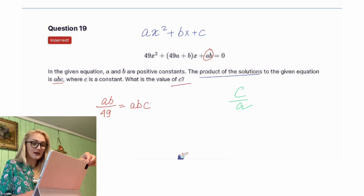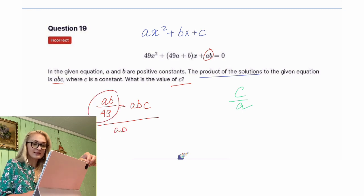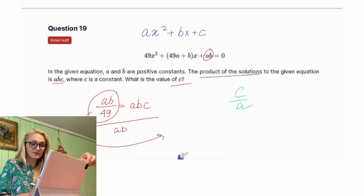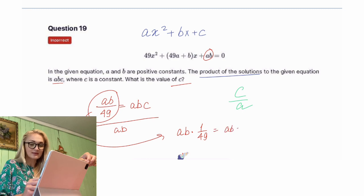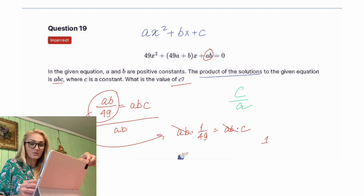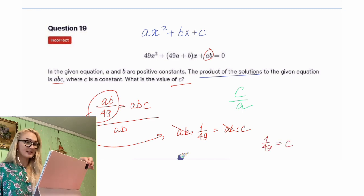And that equals a·b·c. They need us to find c — no problem. We will divide both sides by a·b. I'll rewrite the first term as a·b times one over 49, and that equals a·b times c. When I divide everything by a·b, one over 49 equals c.